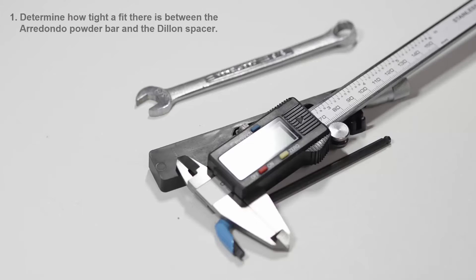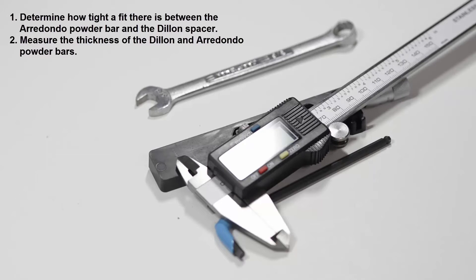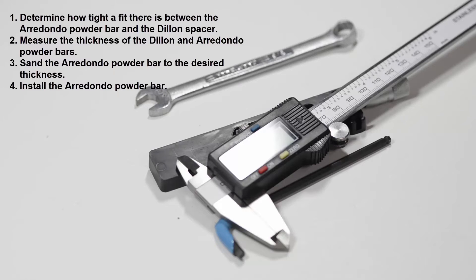The steps we will follow are: determine how tight a fit there is between the Arredondo powder bar and the Dillon spacer, measure the thickness of both the Dillon powder bar and the Arredondo powder bar, sand the Arredondo powder bar to its desired thickness, and then install the Arredondo powder bar.